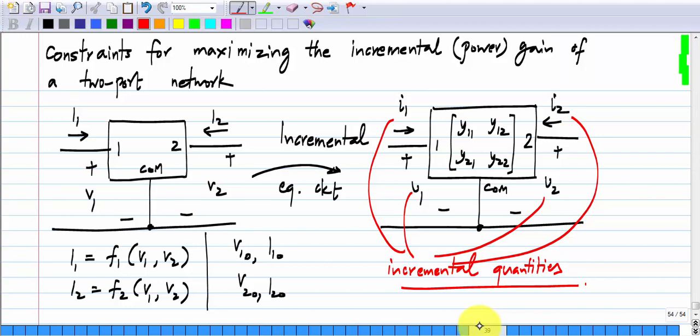What is it that we do? We connect a source, a signal source to port one of this incremental equivalent and a load to port two of this incremental equivalent. This is still the incremental equivalent. We will get some constraints for maximizing the gain. Then we look at those constraints and see what it implies for the large signal, the total characteristics F1 and F2 of the non-linear two port.